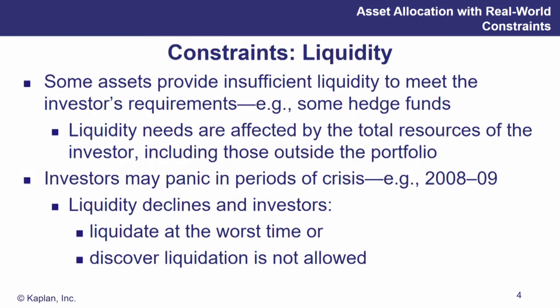Now, another constraint: liquidity. Some assets provide insufficient liquidity. If we look at alternative investments like hedge funds or private equity, it's hard to cash out of those — you can only do it in certain periods of time, and there may be a gate preventing you from taking out too much of your investment. We may also have illiquid assets that don't trade very often. That insufficient liquidity is something that will require a liquidity premium in order to be comfortable owning those investments — it needs to be a pretty good bargain for us to take on this liquidity risk.